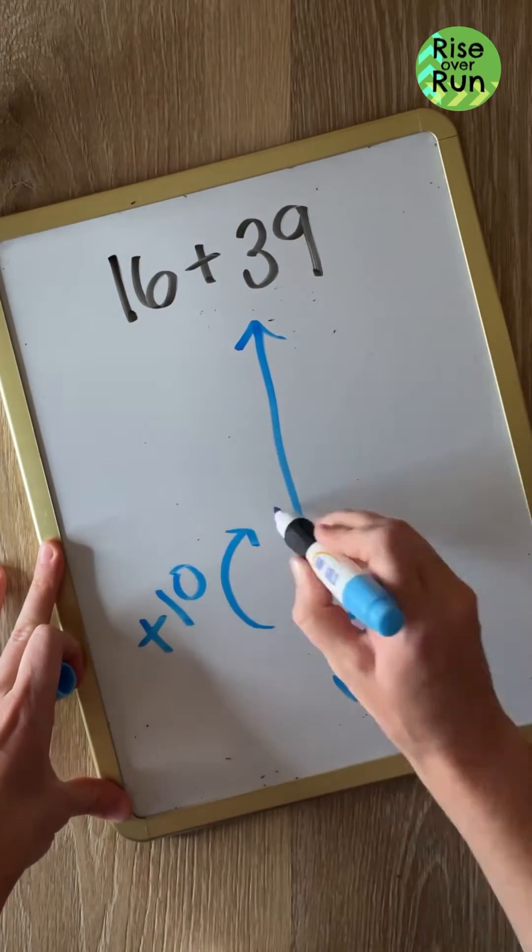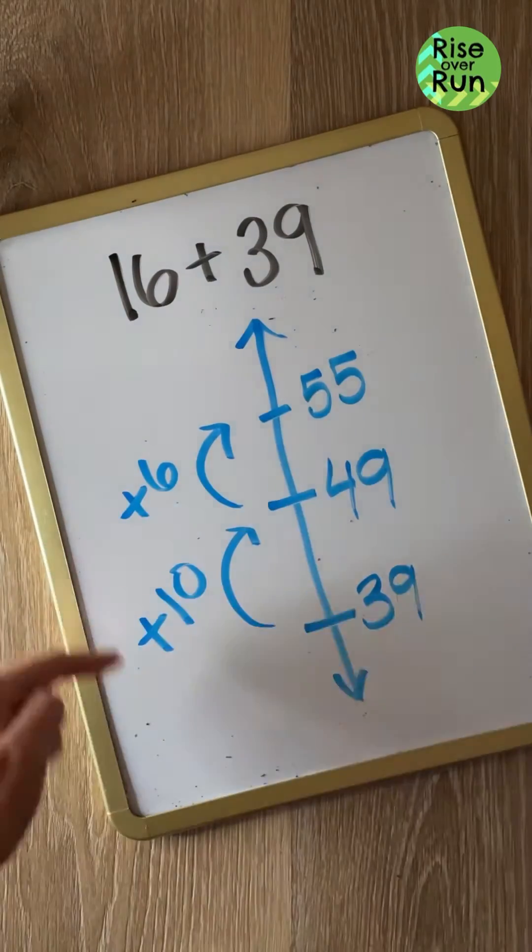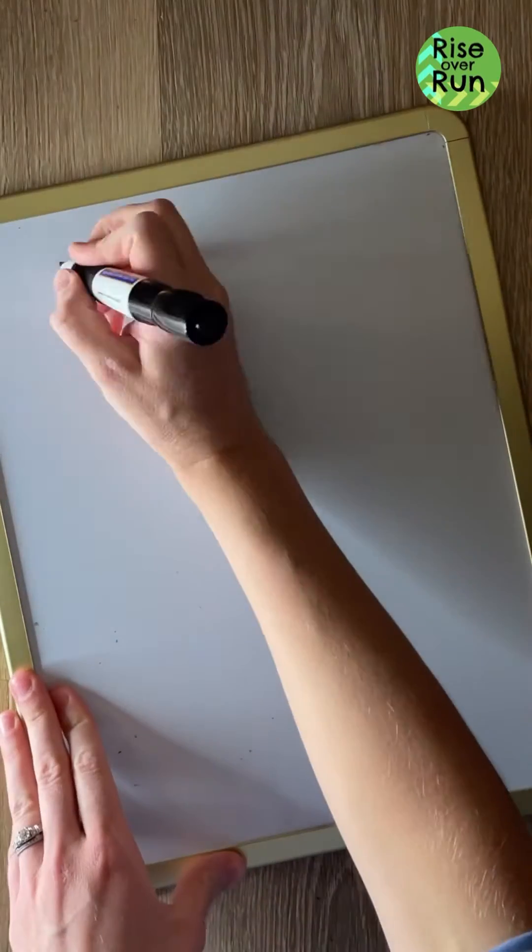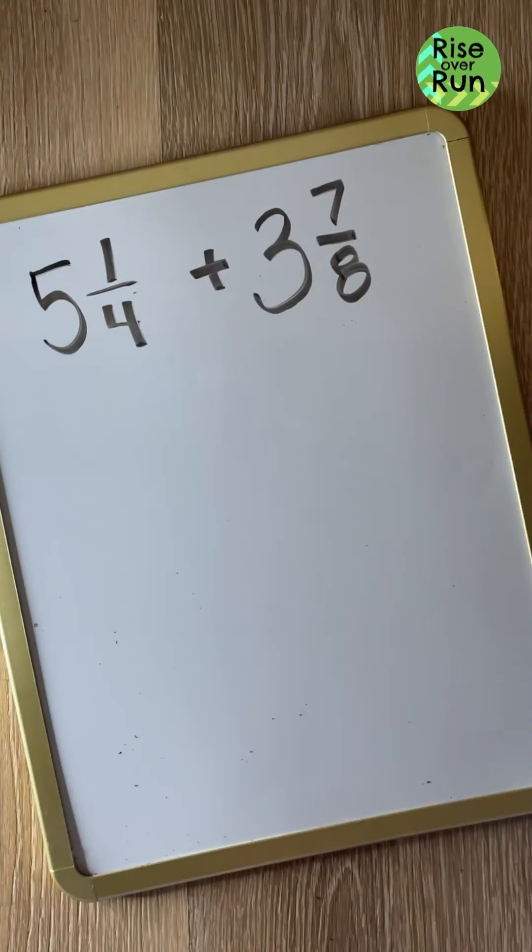And we can emphasize the commutative property, noting that students could start with either addend here. Okay, let's apply these same strategies to some other kinds of numbers.